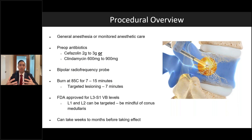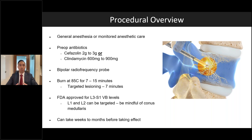Basal vertebral nerve ablation is typically performed under general anesthesia or monitored anesthetic care. Preoperatively, give antibiotics: cefazolin 2–3 grams depending on weight, or clindamycin 600–900 milligrams if the patient cannot tolerate cephalosporins. The probe is a bipolar probe; the basal vertebral nerves are burned at 85 degrees centigrade for approximately 7–15 minutes. With targeted lesioning and confidence in probe tip placement, 7 minutes can yield excellent results. The procedure is FDA approved for L3 to S1 vertebral body levels. L1 and L2 can also be targeted, but you must be mindful of where the conus medullaris terminates. Patient expectation management is critical — it can take weeks to months before effects are felt.